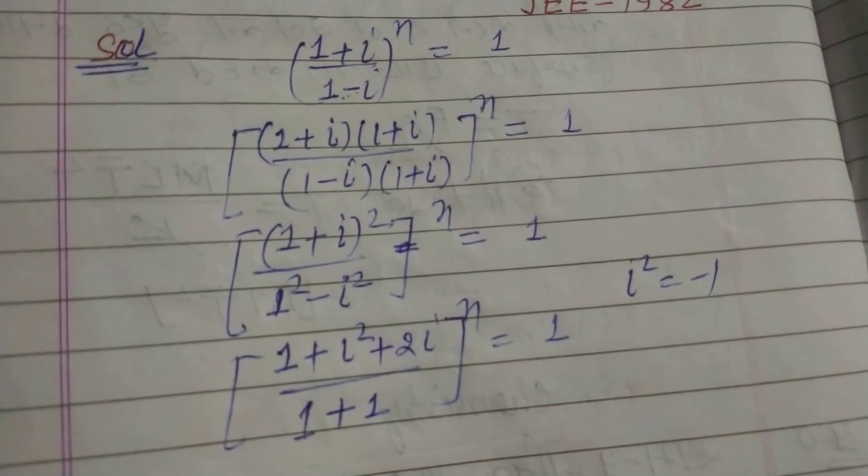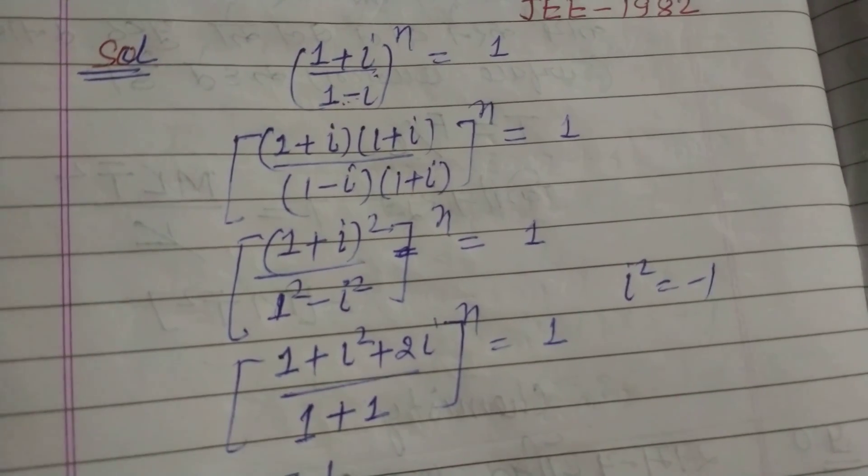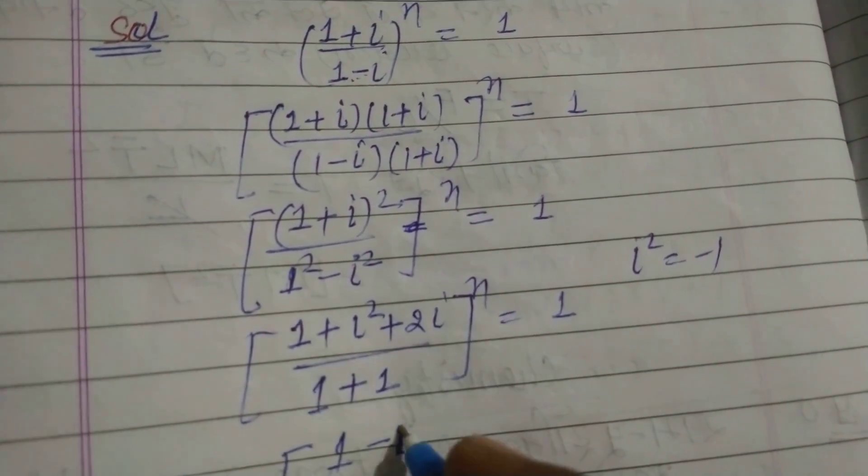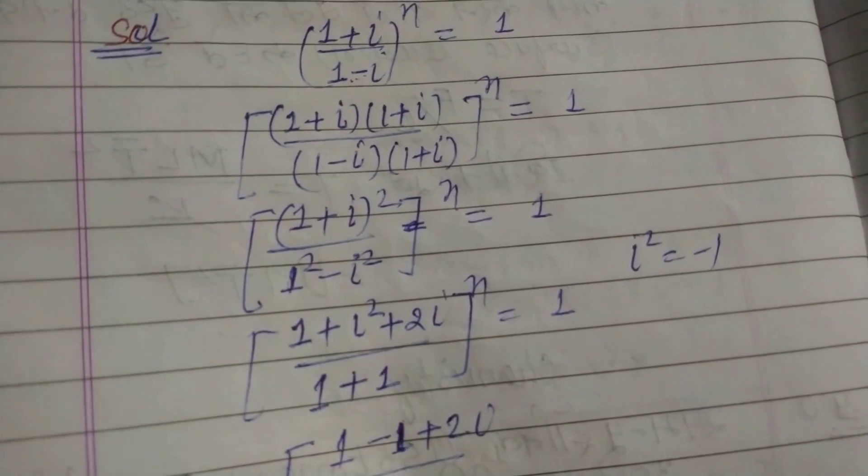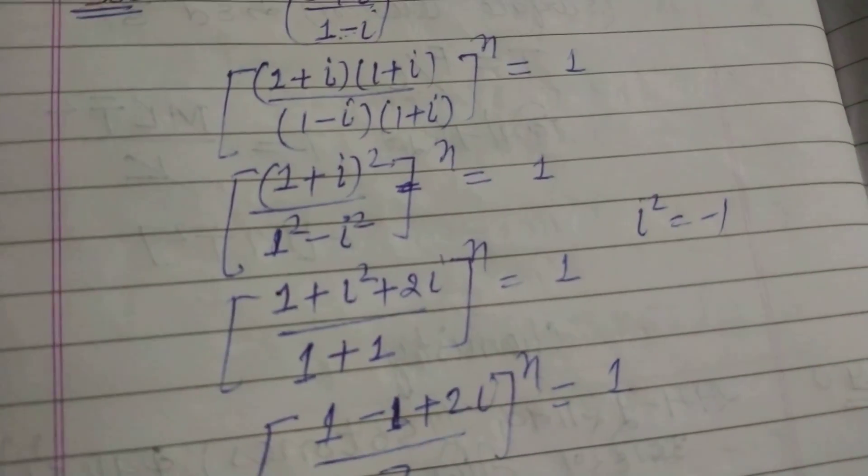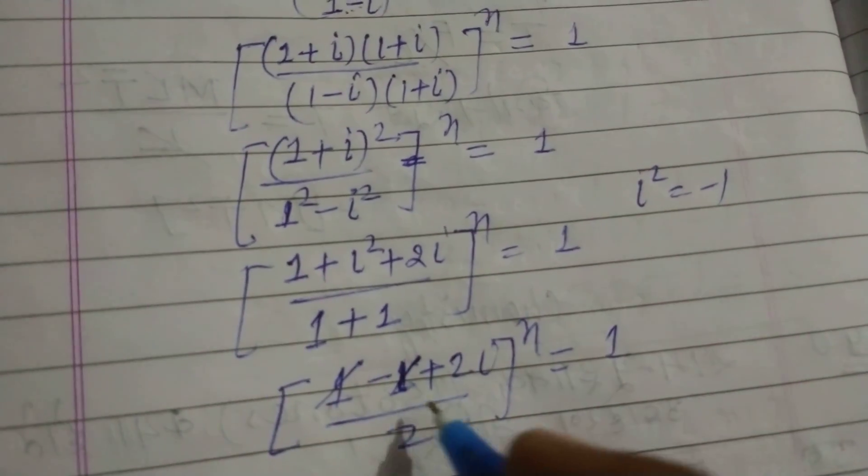So this is 1 minus 1, iota squared equals minus 1, plus 2 iota over 1 plus 1 to the power n equal to 1. This is cancelled.